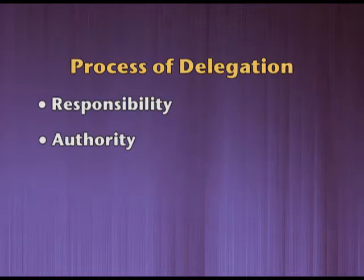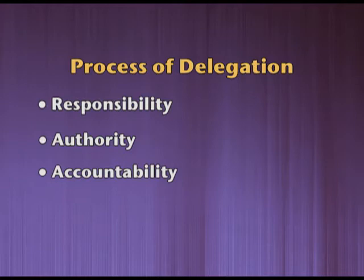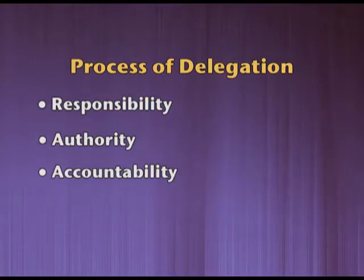The third and most important step in the delegation process is accountability. Once the responsibility and authority are given to the employee, he is completely accountable for completing that job. His responsibility is now fixed. If the work is not completed, he is accountable to the superior, and the superior has to ask the subordinate why the work was not completed. The subordinate has to answer the reasons behind the non-completion of the task. So here, we have come to an end of the process involved in delegation.